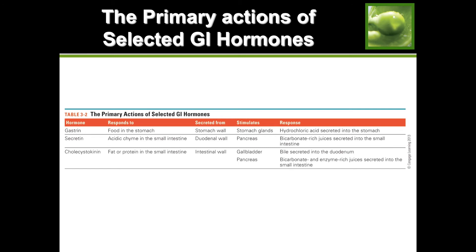Primary actions of GI hormones: Gastrin responds to food in the stomach, is secreted from the stomach wall, and stimulates stomach glands to release hydrochloric acid. Secretin responds to acidic chyme in the small intestine, is secreted from the duodenal wall, and stimulates the pancreas to release bicarbonate-rich juices to neutralize the acidic chyme. Cholecystokinin (CCK) responds to fat or protein in the small intestine, is secreted from the intestinal wall, and stimulates both the gallbladder to secrete bile and the pancreas to release bicarbonate and enzyme-rich juices. These hormones are messengers - they don't do digestion themselves.